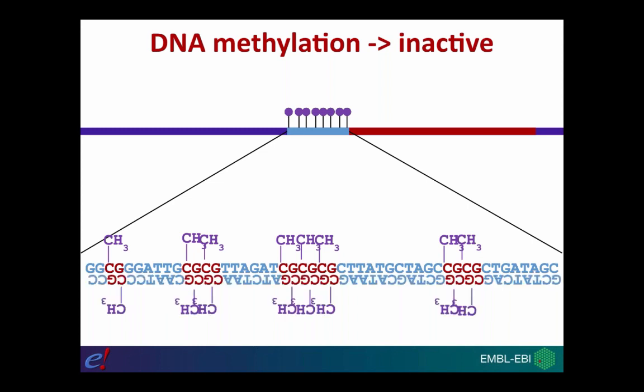DNA is double-stranded, so a CG on one strand is a CG on the reverse strand based on reverse complementarity, and the pattern of methylation is conserved from the forward to the reverse strand. Methylation of CpG islands is associated with transcriptional inactivity — a reduction in gene expression — because transcription factors and RNA polymerase are unable to access their binding motifs within the methylated DNA.